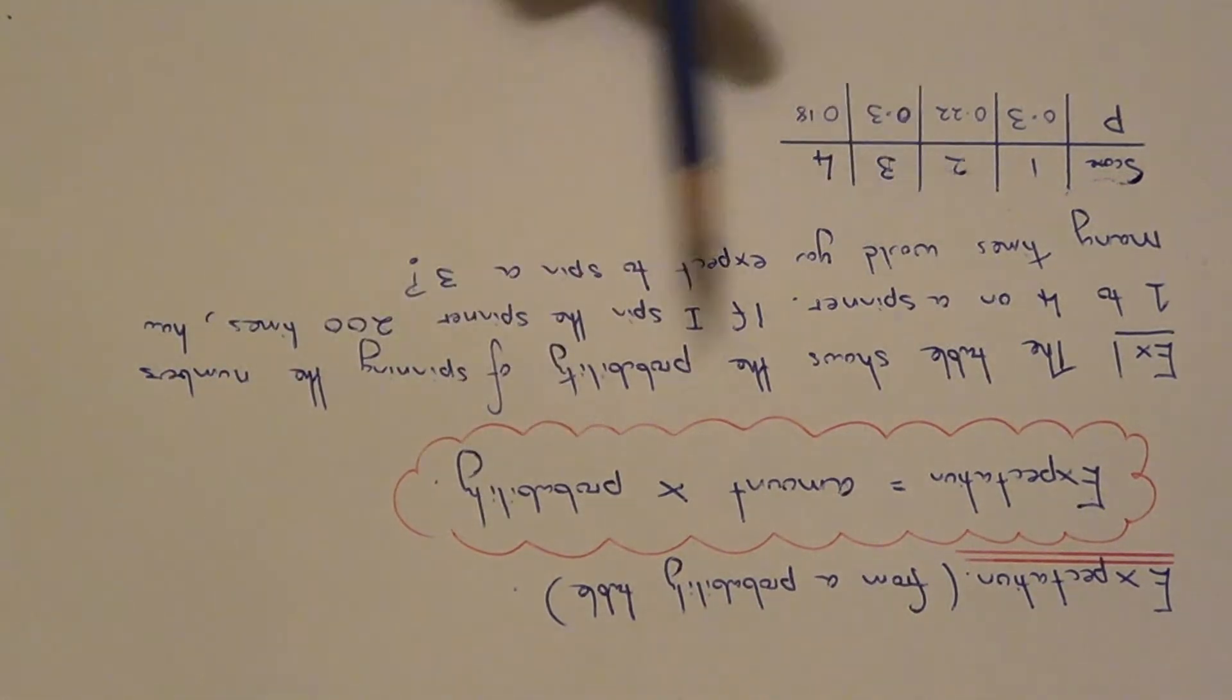So let's apply this formula to the example below. We have a probability table relating to some scores 1 to 4 on a spinner and we have the probabilities underneath.